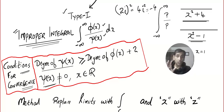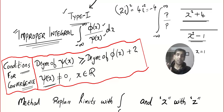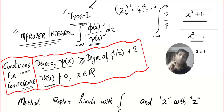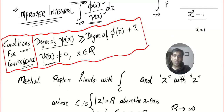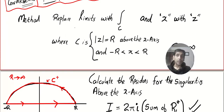Let's make it very clear one last time. How do you identify Type 1? It must be polynomial divided by polynomial, the limit must be minus infinity to infinity, the degree of the denominator must be at least 2 more than the numerator, and the denominator should never ever vanish when you plug in real numbers.